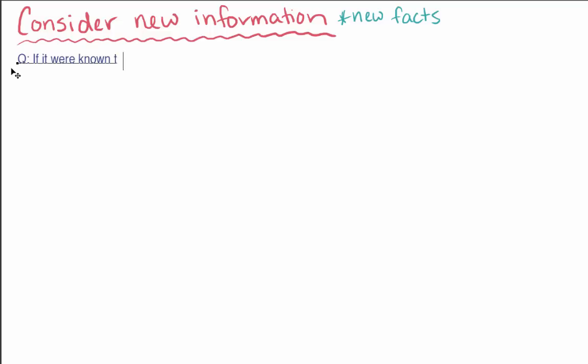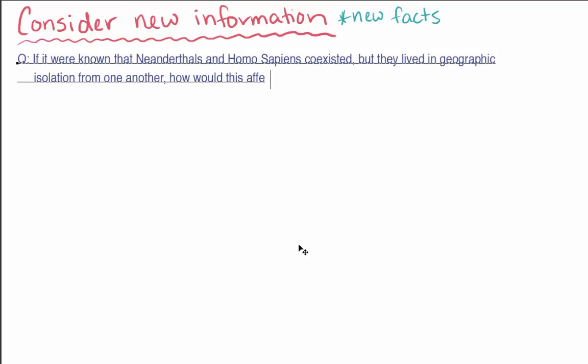If it were known that Neanderthals and Homo sapiens coexisted, but they lived in geographic isolation from one another, how would this affect the conclusions reached by the author?